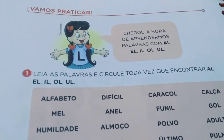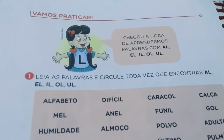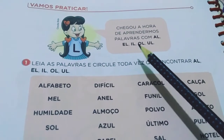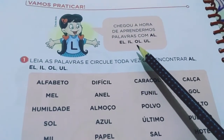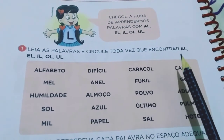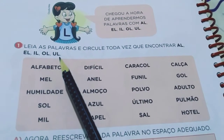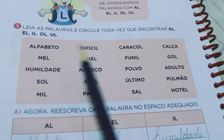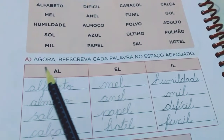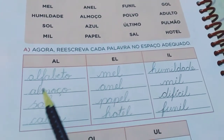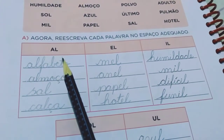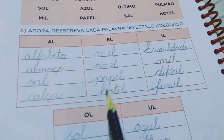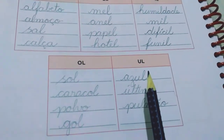Agora nós vamos para as nossas atividades! Aqui na nossa atividade de Língua Portuguesa, página 92 - Vamos praticar! Chegou a hora de aprendermos palavras com AL, EL, IL, OL, UL. Leia as palavras e circule toda vez que encontrar AL, EL, IL, OL, UL. Você vai fazer a leitura das palavras e circular os pedacinhos citados. Depois que você fizer a leitura e circular, vai reescrever as palavras nos espaços: palavrinhas com AL, com EL, com IL, com OL e com UL.